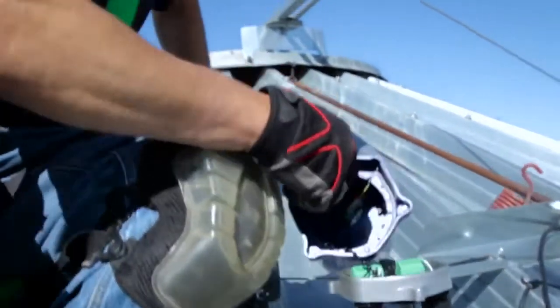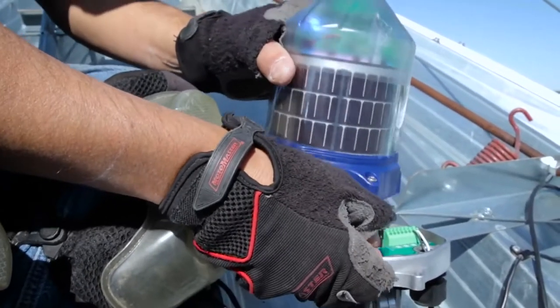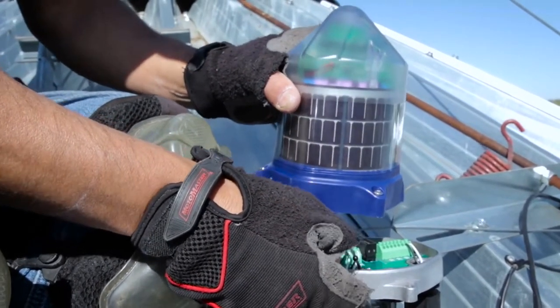Turn the cable node dome upside down and locate the red jumper to be removed. Remove the jumper to activate the cable node.